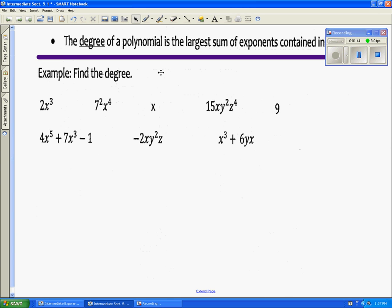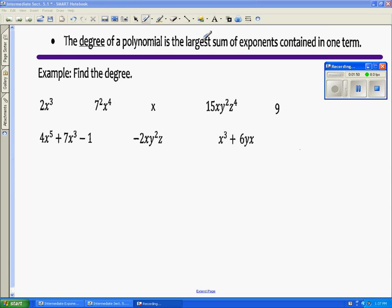Okay, the first thing we're going to do is we're going to look at the degree of a polynomial. It is going to be the largest sum of exponents contained in one term. So when we look at this one, the degree is going to be three. The degree of the first one, x equals three.